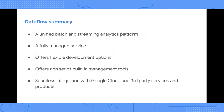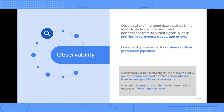Today we're going to speak more about Dataflow's management capabilities, in particular observability. Observability of managed pipelines is the ability to understand the health and performance based on output signals such as metrics, logs, events, traces, errors, and more. Observability is essential when running business-critical production applications, such as those we saw from customers at scale.